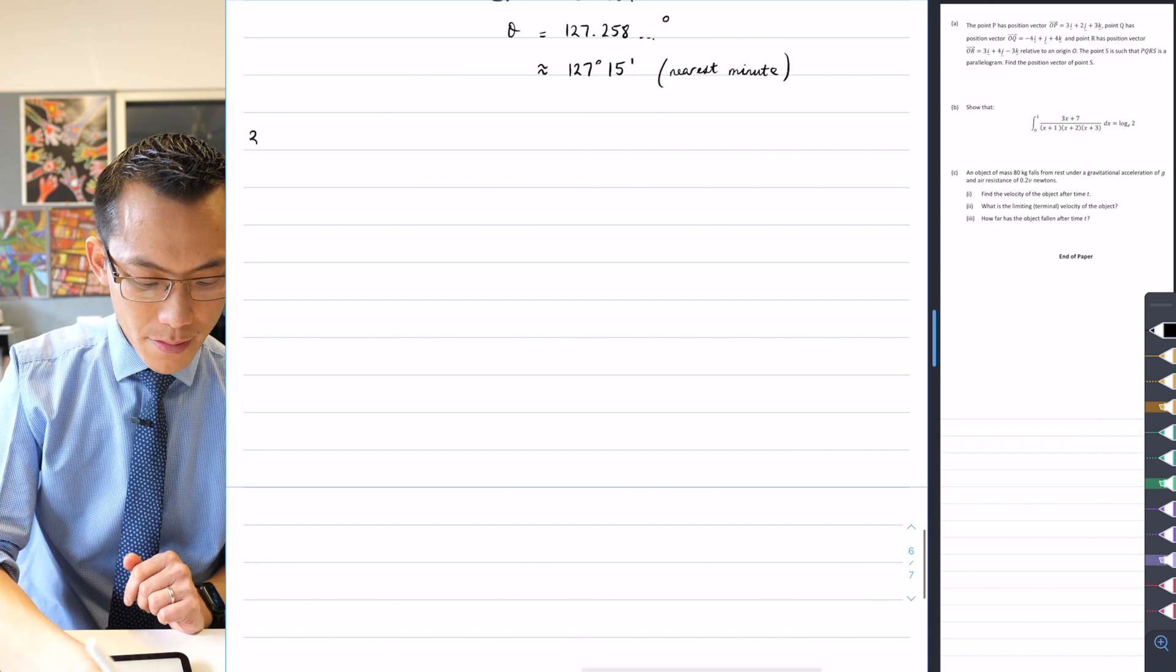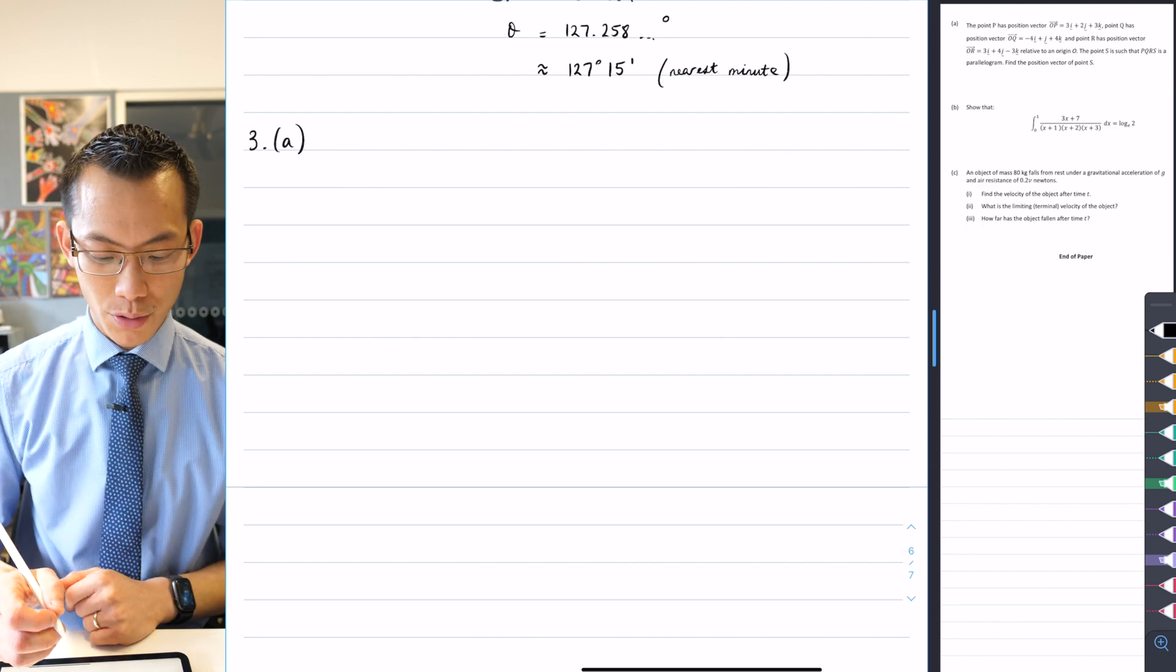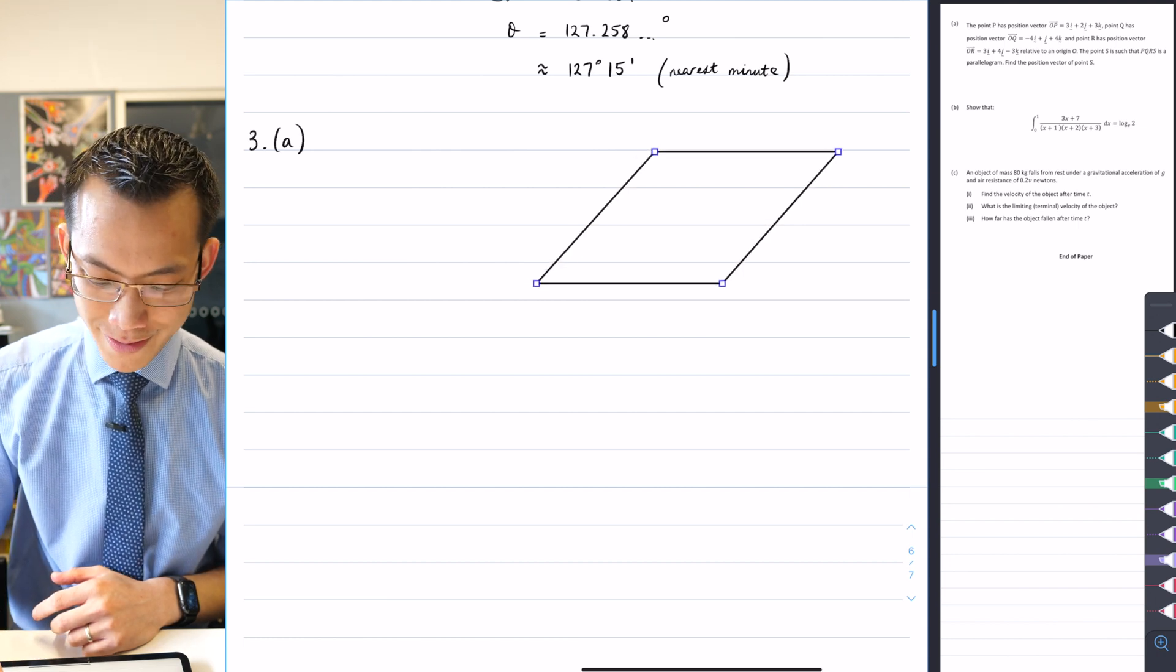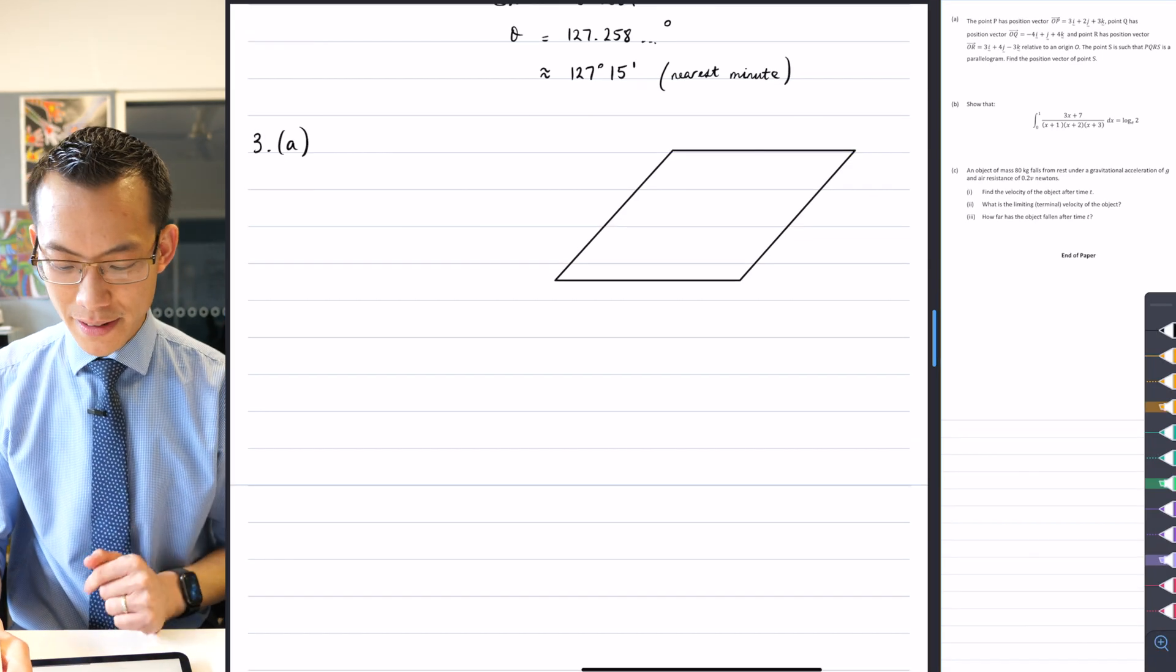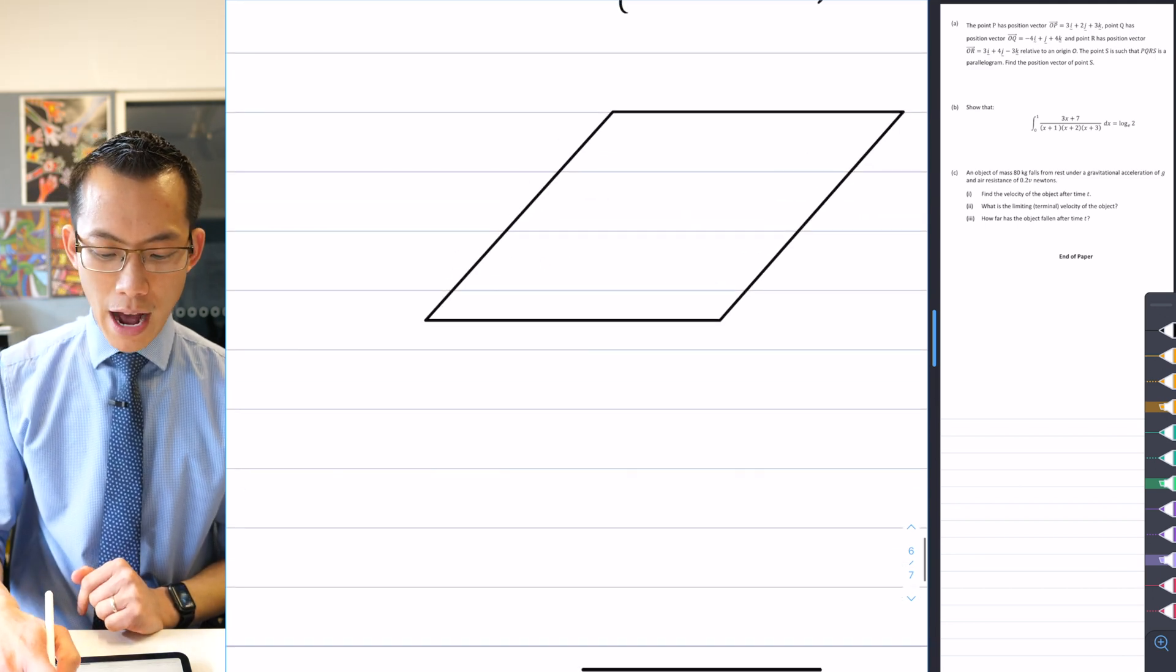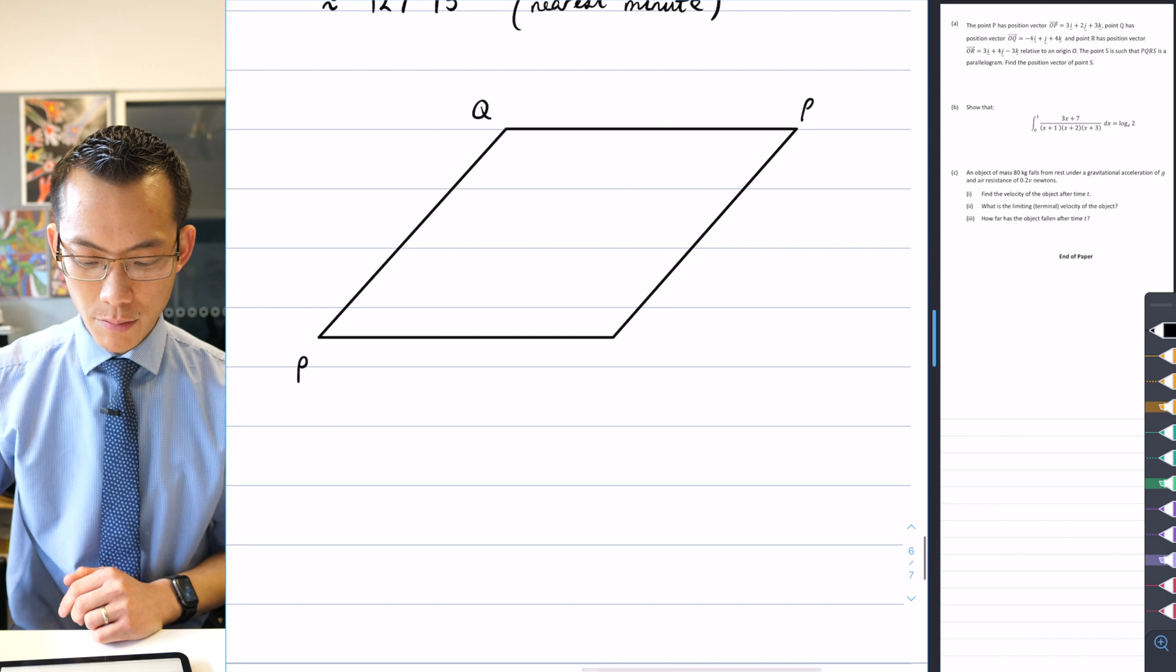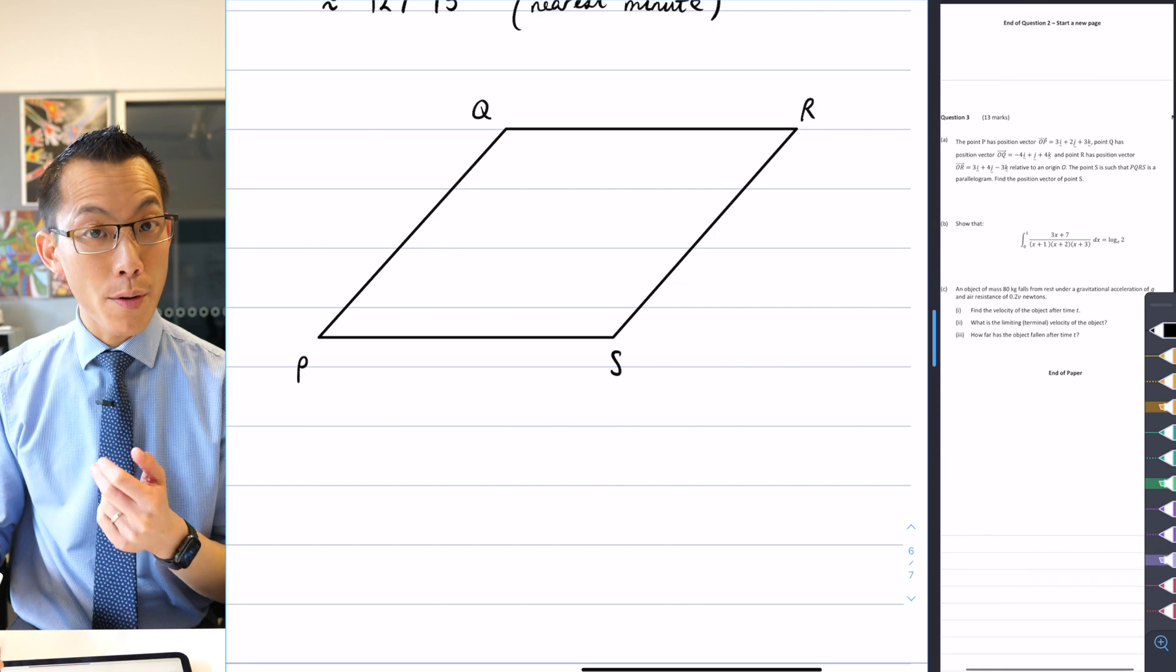So let's have a look at how I would set out a very simple diagram for this. This is question three and we're on part A. So we're told that there is a parallelogram of some sort. I'm going to draw myself a parallelogram. I'm told that it's a PQRS parallelogram, so I'm going to put P here, Q here, R over here in the top right hand corner, and then S.